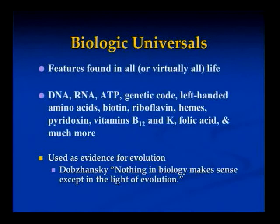Now we're going to jump into some of the interesting stuff: biologic universals — features found in all or virtually all life forms. Some examples are DNA, RNA, ATP (the energy source of the cell), the genetic code, left-handed amino acids which are used everywhere, biotin, riboflavin, hemes, pyridoxin, and vitamins such as B12 and K.